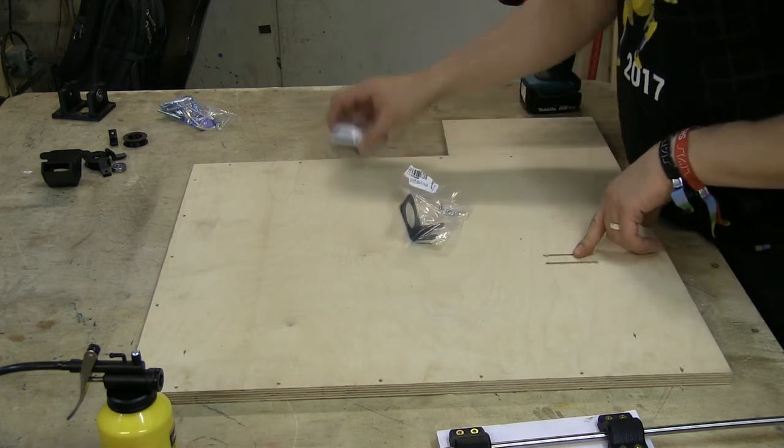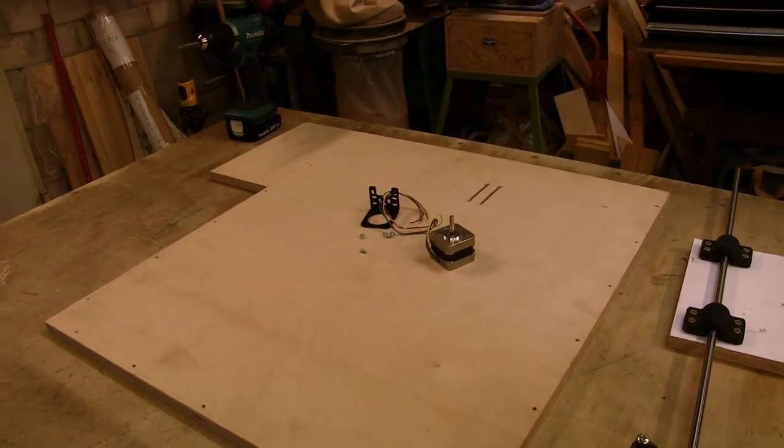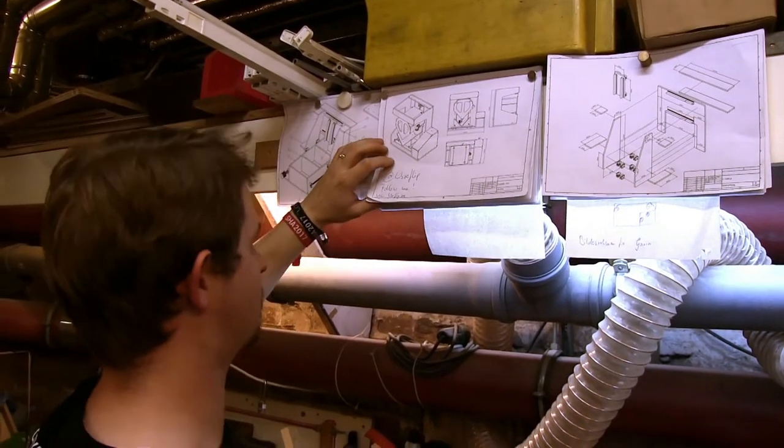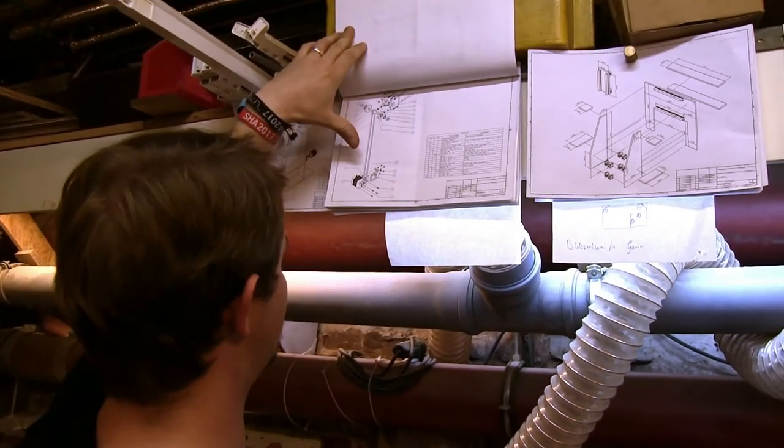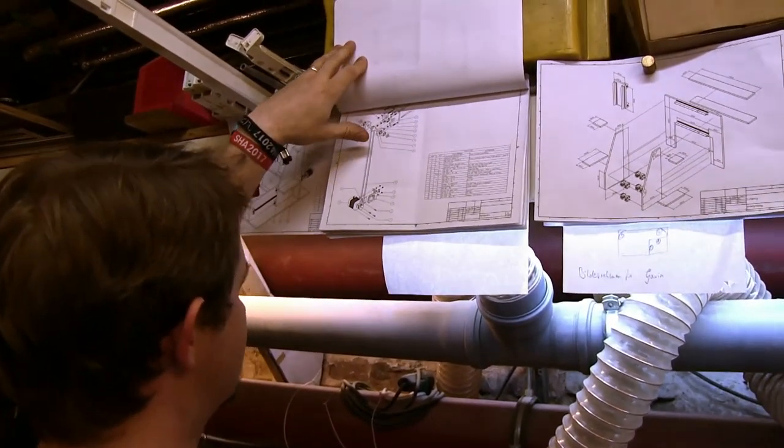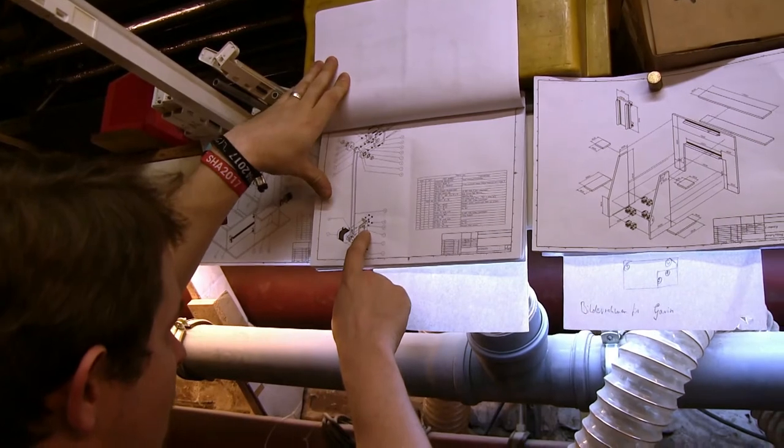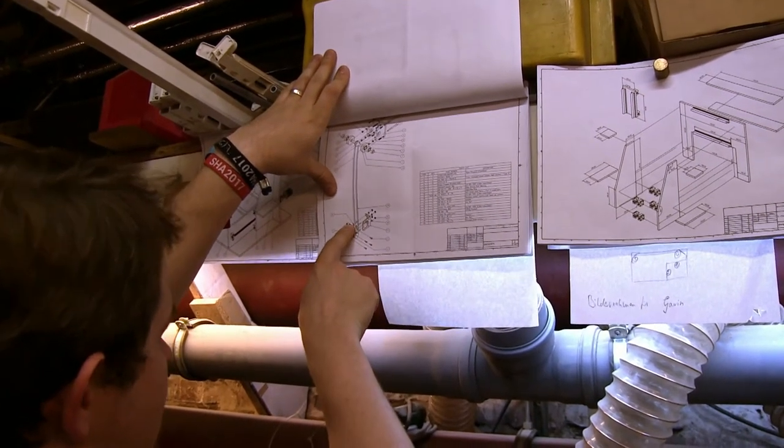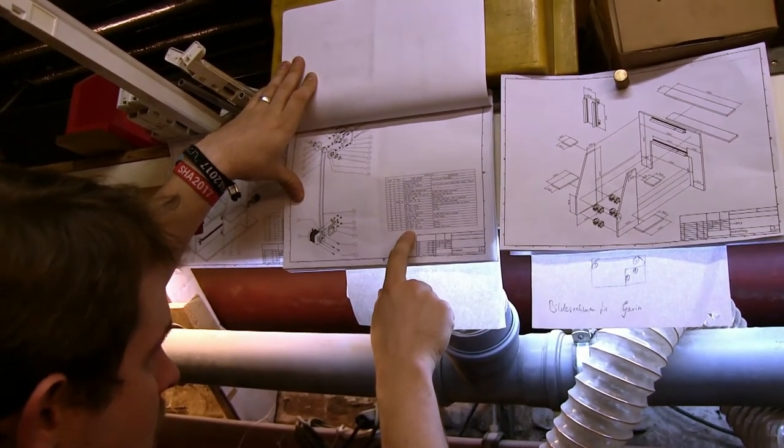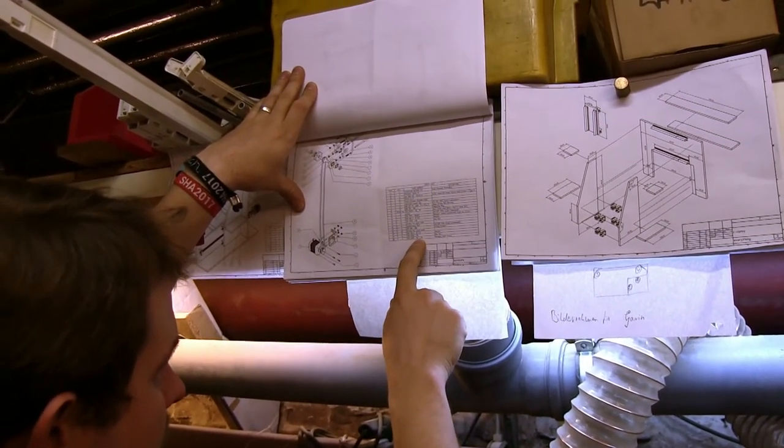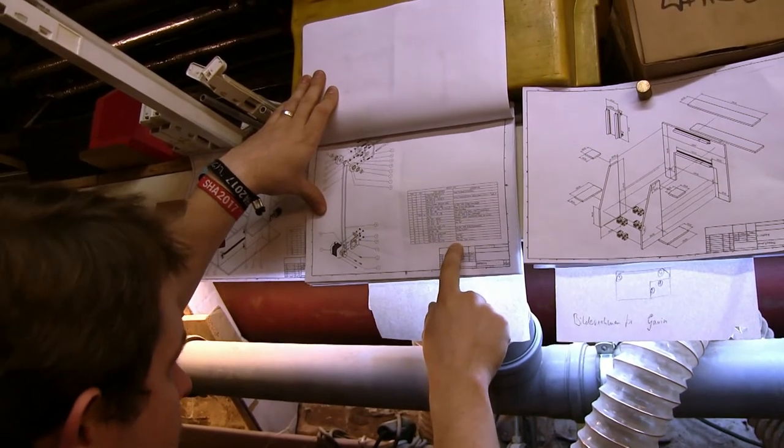I'm not sure which screws I need. This is the explosion view of the drivetrain of the vertical axis. This is the motor bracket and this is the screw that I'm looking for. It's number 20, item number 20. It's ISO 4017 M4 by 25 hexagon head screw.